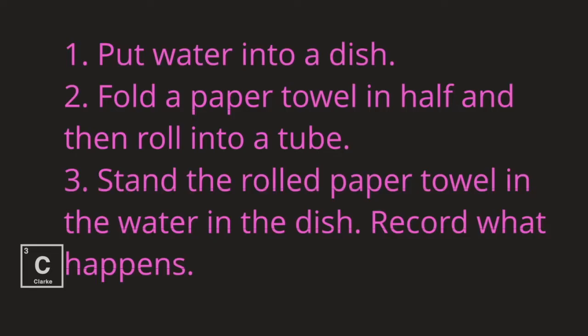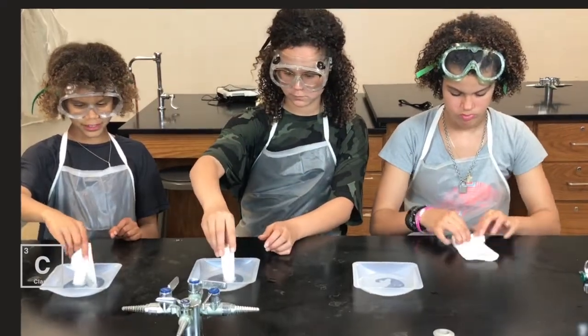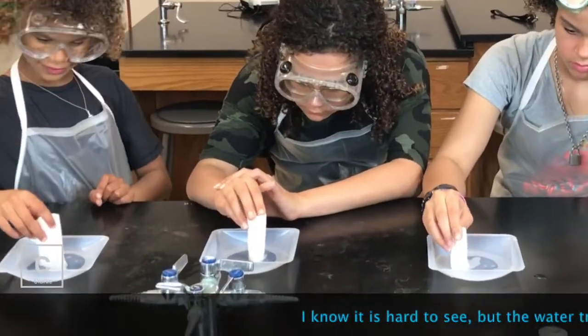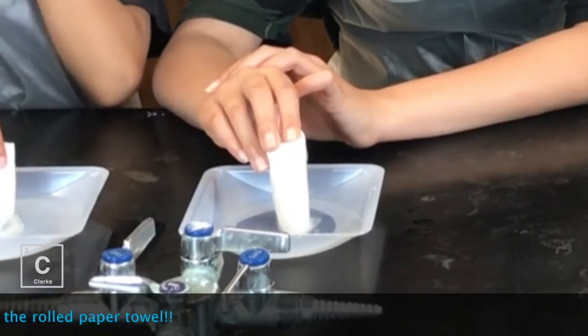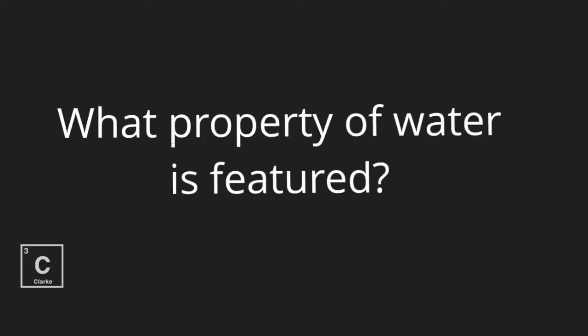Put water into a dish. Fold a paper towel in half, then roll into a tube. Stand the rolled paper towel in the water in the dish. Record what happens. What property of water is featured?